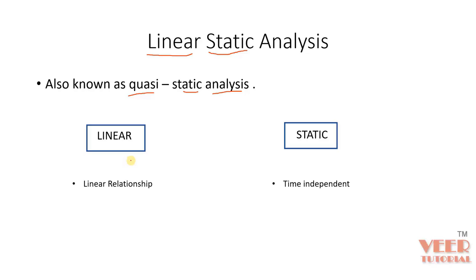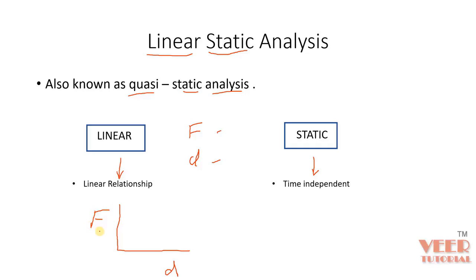Linear means whenever we have a linear relationship between parameters. Static means whenever anything is independent of time. When we perform any analysis, we have parameters like force and displacement. Whenever there is a linear relationship between force and displacement — meaning their graph is a straight line — this type of analysis is called linear analysis.